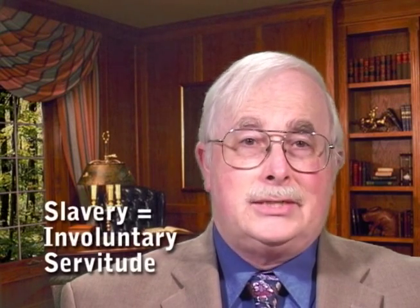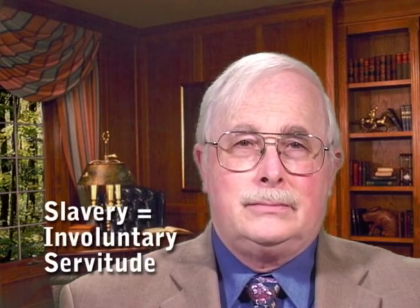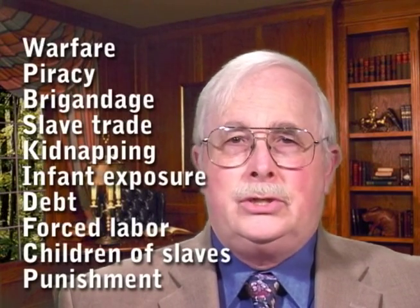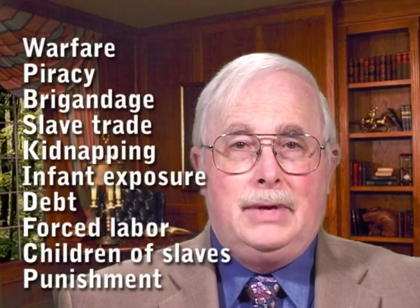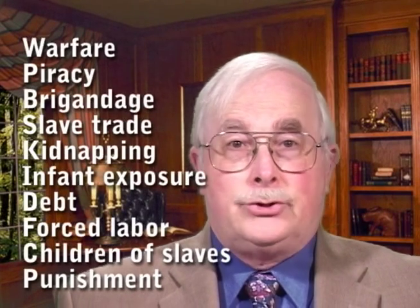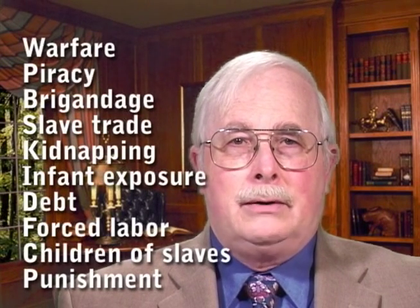We live in a world where slavery is nearly abolished. But the ancient world of the Old and New Testaments, slavery was all too prevalent. One way to define slavery is involuntary servitude, subjecting one person to the power of another. Most slaves were considered chattel — that is, property that can be bought and sold. Slavery came about through warfare, piracy, brigandage, the international slave trade, kidnapping, infant exposure, failure to pay a debt, forced labor of alien populations, natural reproduction of the existing slave population, and the mines or gladiatorial combat.